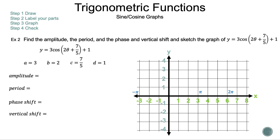Now let's write down what we need to find: the amplitude, the period, the phase shift, and the vertical shift. The amplitude is the absolute value of a — substituting 3 for a gives the absolute value of 3, which is 3. The period is 2π over the absolute value of b — substituting 2 for b gives 2π over 2, which is π. The phase shift is negative c over b — substituting 7/5 for c and 2 for b gives negative 7/5 divided by 2, which is negative 7/10. Since we have a negative, the graph shifts to the left.